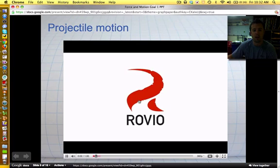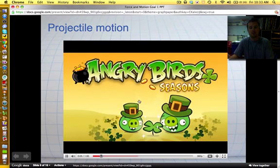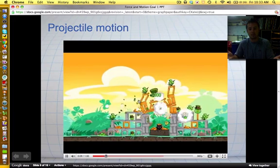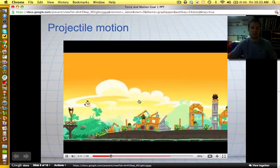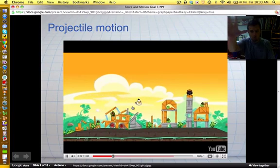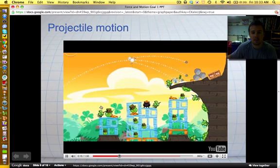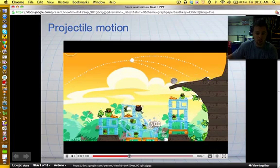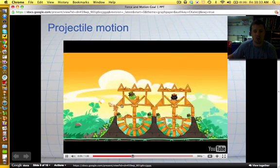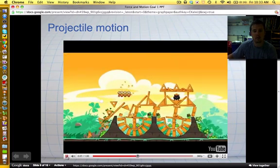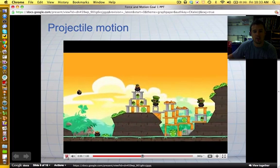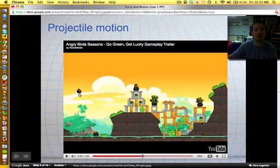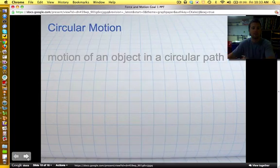Example of projectile motion, one of your favorite games and one of my favorite games, Angry Birds. These guys are all projectiles. Right there you can see this bird right there. That bird is a projectile. There's nothing acting on that bird except for gravity. That's it. So it's a great example of projectile motion.